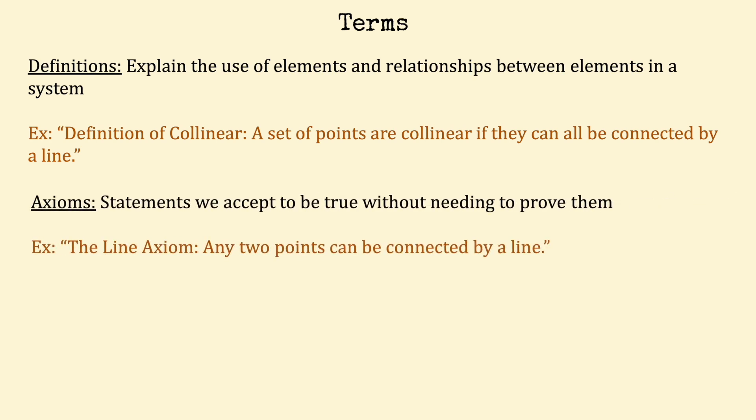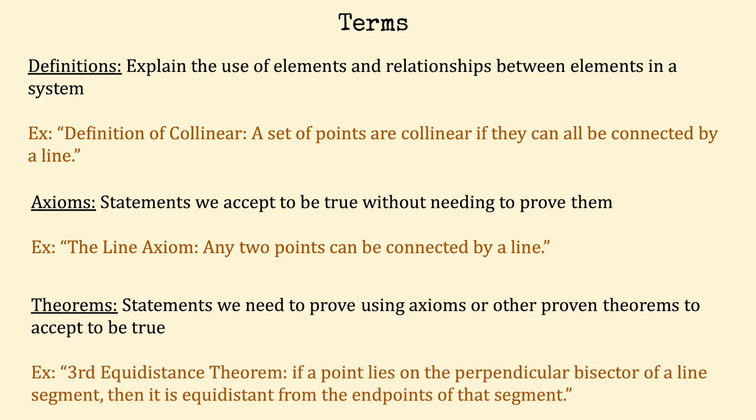An axiom is a statement that we accept to be true in our system without having to prove it to be true. For example, in Euclidean geometry, we have the line axiom. We don't usually prove it to be true — we don't really need to, so we just accept it. On the other hand, a theorem is a statement that we do need to prove to be true in order to accept it, and we usually do this using previously proven theorems and axioms.